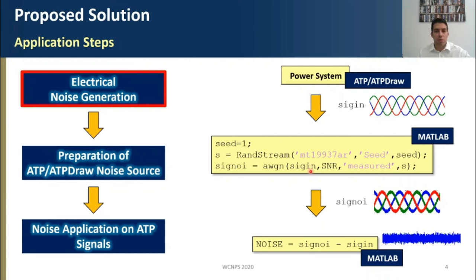To do so, we consider a user-defined signal-to-noise ratio, which is proportional to the measured power in the input signal, considering a given seed random stream to generate this noise. And so, as a result, we have the signal SIG IN here, and then by subtracting the noisy signal SIG IN from the noisy signal, we can estimate a pure noise signal, which is called here noise. This procedure is also performed in MATLAB environment.